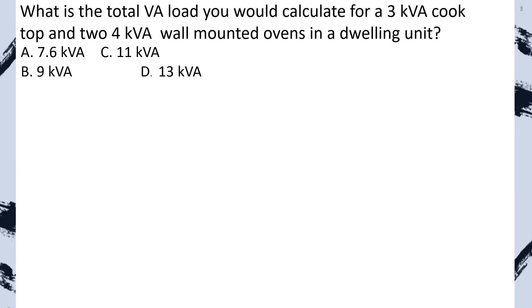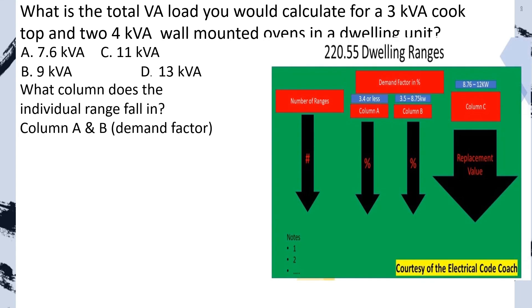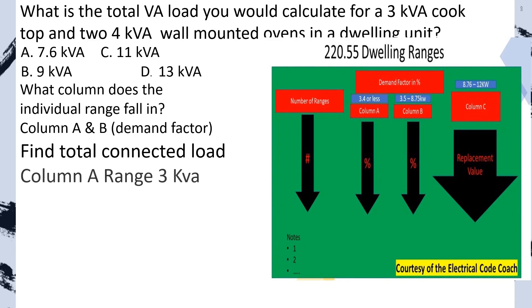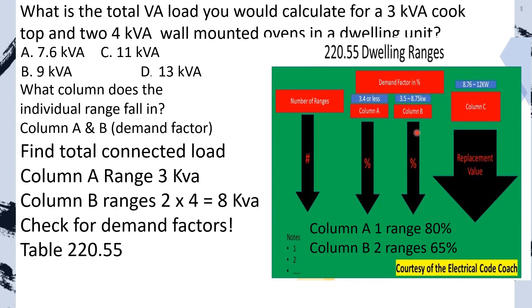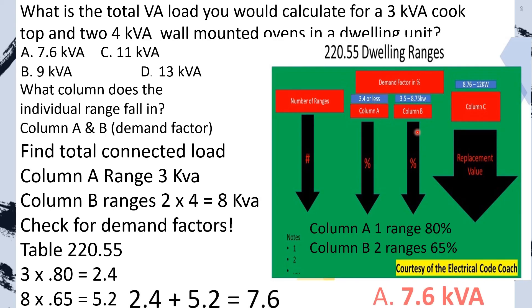What is the total VA load you would calculate for a 3 KVA cooktop and two 4 KVA wall-mounted ovens in a dwelling unit? First, what column do the individual ranges fall in? We find they fall into both column A and column B. This question is straightforward — treat the column A ranges individually, the column B ranges individually, and then total them together. The column A range is just one at 3 KVA. The column B ranges: 2 multiplied by 4 KVA gives 8 KVA. Now check for demand factors. For column A, one range gives a multiplier of 80%; for column B, two ranges gives 65%. We apply the math to each group separately, then total them together, and we select A.